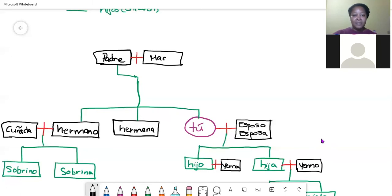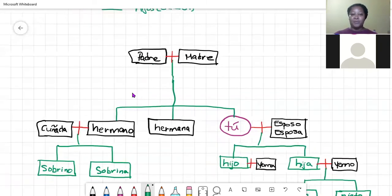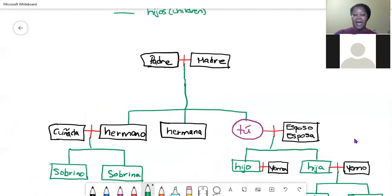And your padre and your madre produced you and your siblings. Now your padre is not an only child. Your padre has a sibling, a brother, I should say. And the brother of your padre is your tío. And your padre also had another sibling, and he had a sister. And the sister of your padre is your tía.